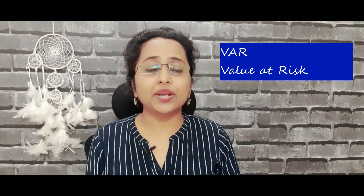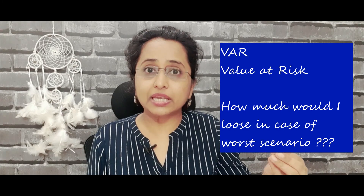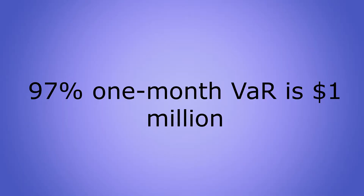VAR gives you an idea of how much money you would lose in a worst-case scenario. For example, if a 97% one-month VAR is 1 million dollars, that means there is a 97% confidence that in the next one month your portfolio will not lose more than 1 million dollars.